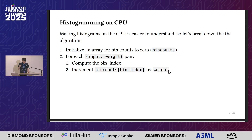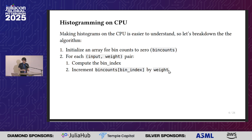If you make histograms on CPU, it's fairly straightforward. You initialize your output bins and then start iterating over pairs of inputs and weights. You compute where each input corresponds to and increment that entry in the output array by the weight.